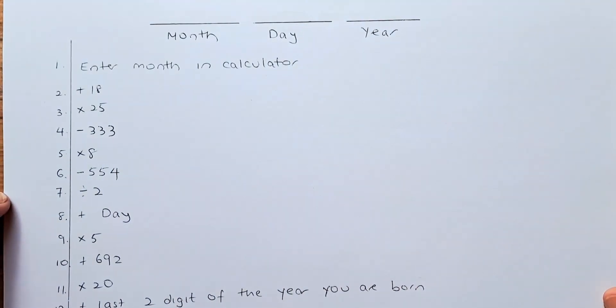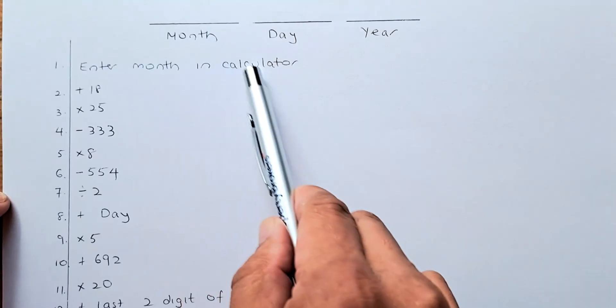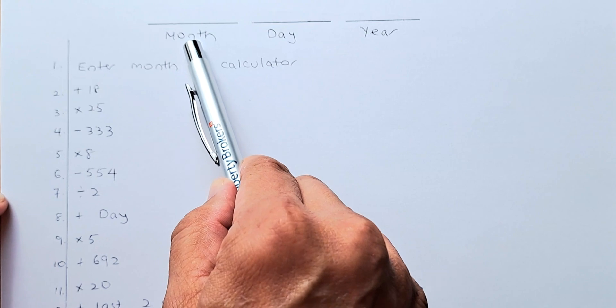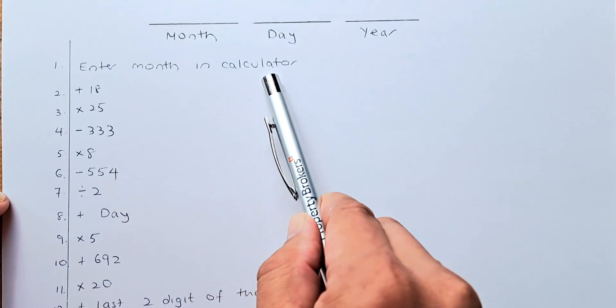You have done that? Okay, let's go! So first, you need to enter the month. So if you are born in February, you put 2. If you were born in June, you put 6. So enter the month in your calculator.